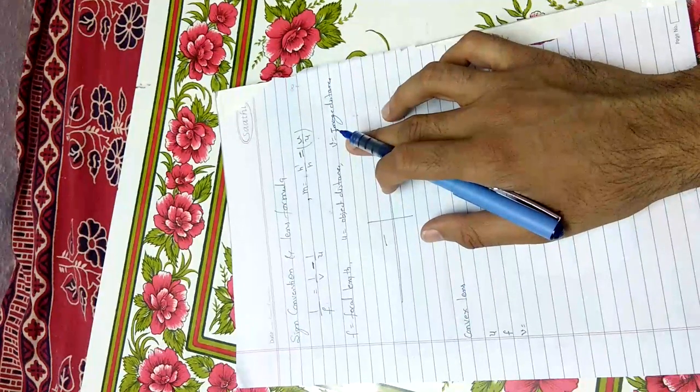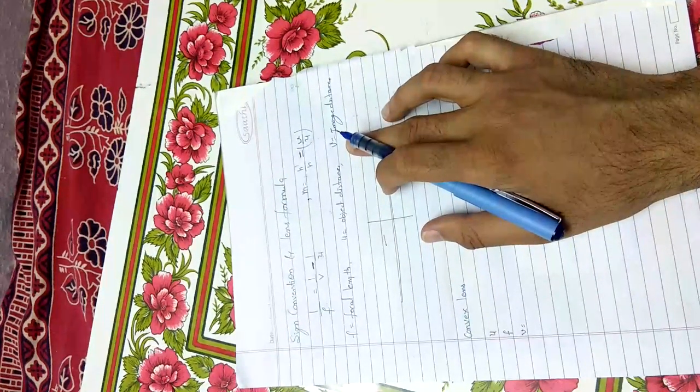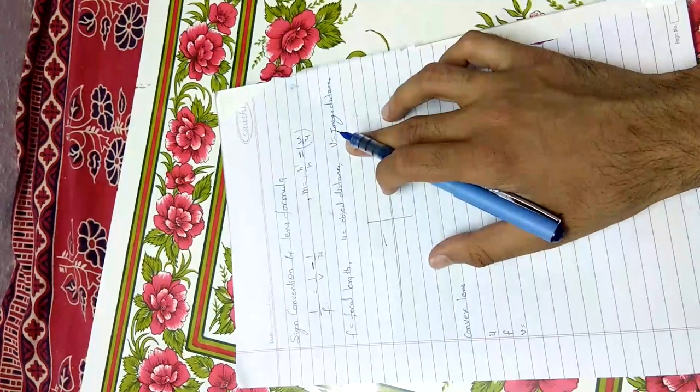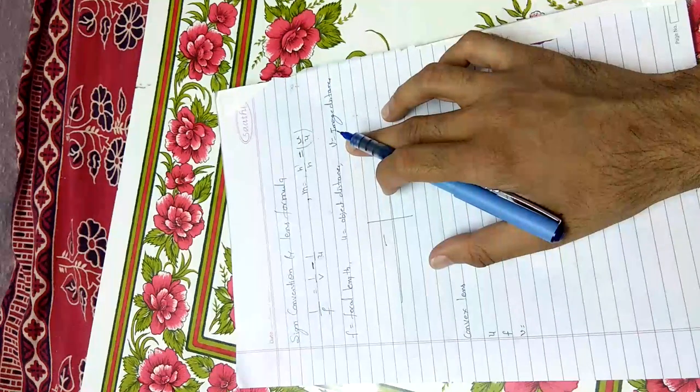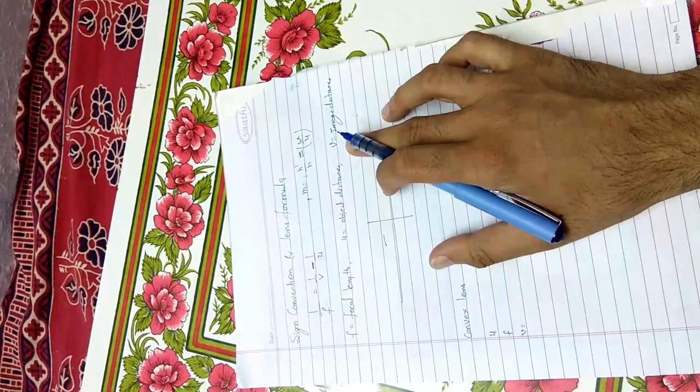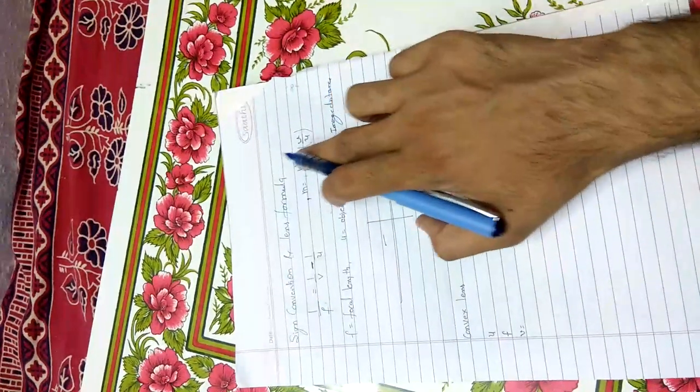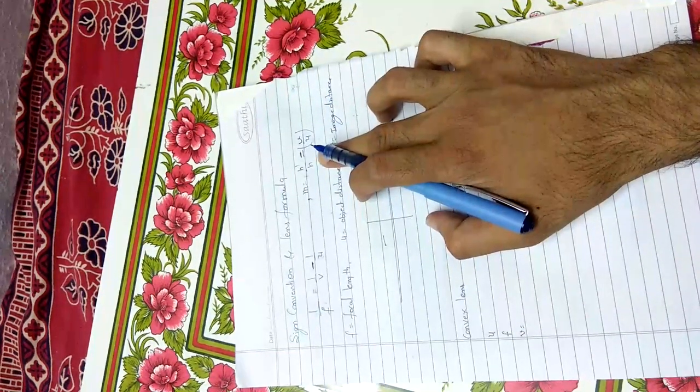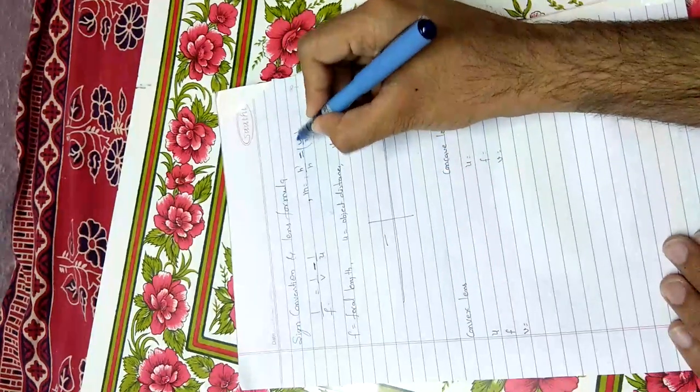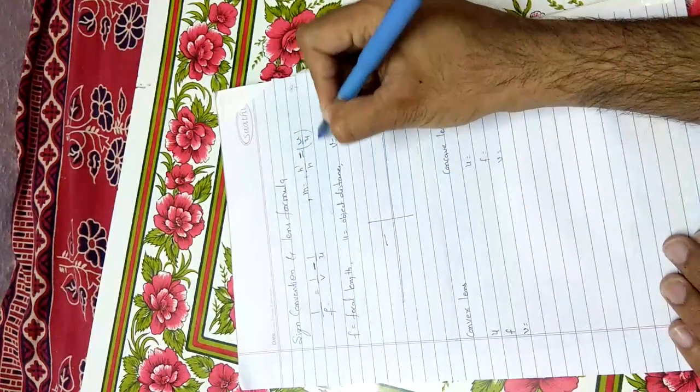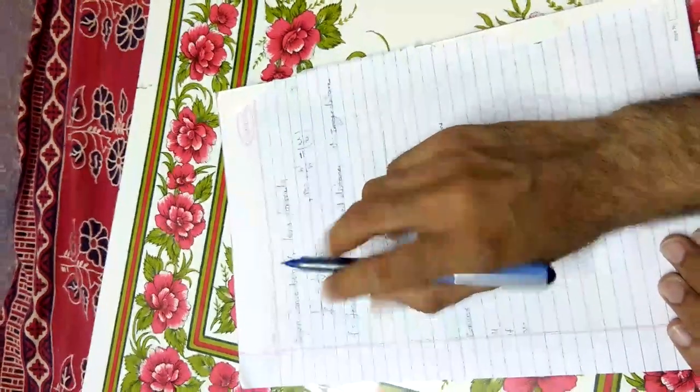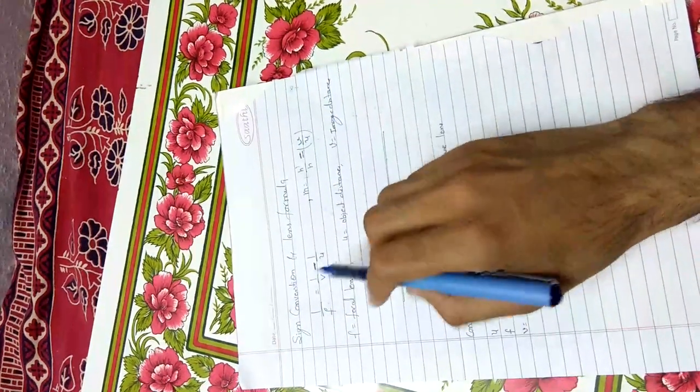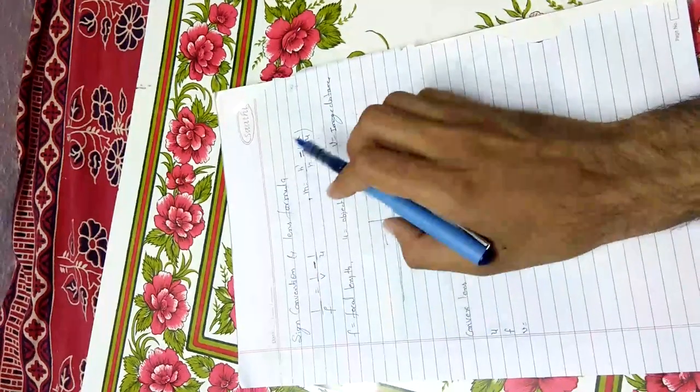Magnification was the ratio of height of image to height of object. What is the relation between image height and object height? How much times it is greater or smaller to represent. Magnification m = h'/h. In mirror case it was -v/u. Here in lens case it is +v/u. In mirror it was negative sign, here in lens it is positive sign.